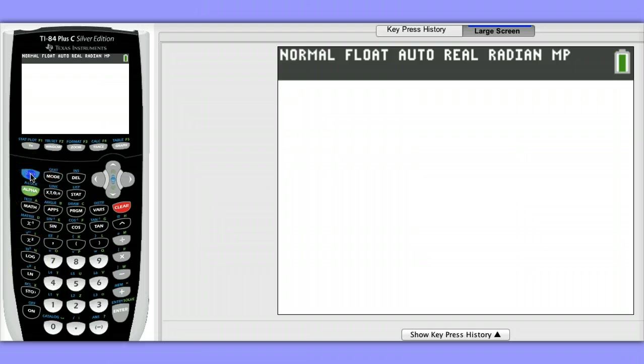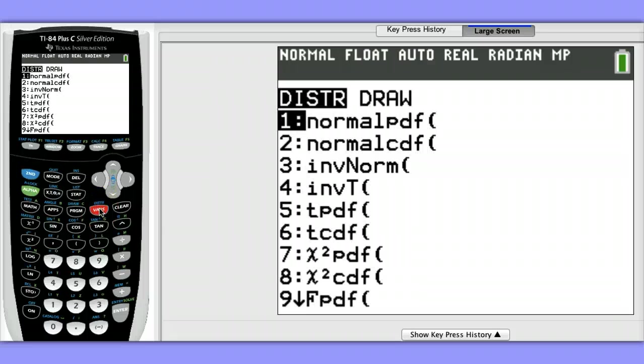To begin, hit 2nd, VARS, to see a list of distributions. We're going to choose option 6, TCDF.